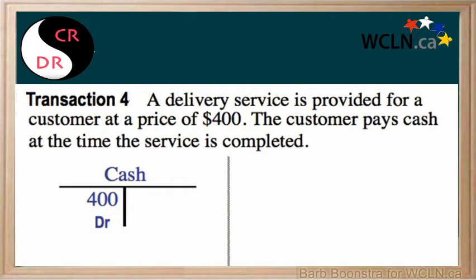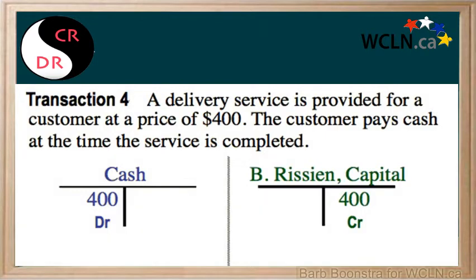In this transaction, the customer has paid $400 for a service. Cash is increased by $400 because cash has come into the company. The value of the company has increased by $400, which means the capital account increases by $400. The capital account is an equity account which increases on the credit side, so it will be a credit entry of $400.